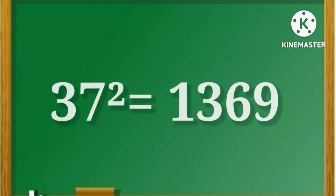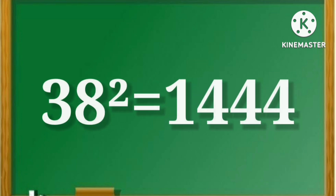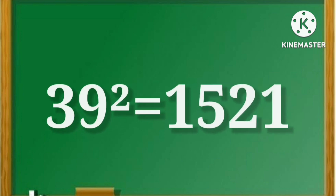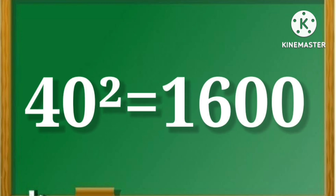37 square is equal to 1369. 38 square is equal to 1444. 39 square is equal to 1521. 40 square is equal to 1600.